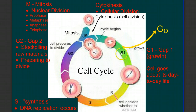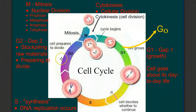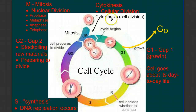In that case, G1 would be the day-to-day life of that factory, producing whatever that factory does. And at some point, a decision is made that it's time to split into two factories. The first event we'd want to do is double the amount of instruction manuals — that's DNA replication. Then gather up all the raw materials, the extra machinery, the parts we'd need to start up two factories. And then divide the two copies of the instruction manuals into two central offices, and then divide into two factories.